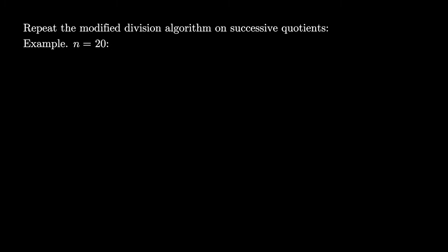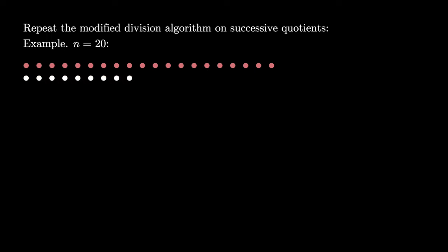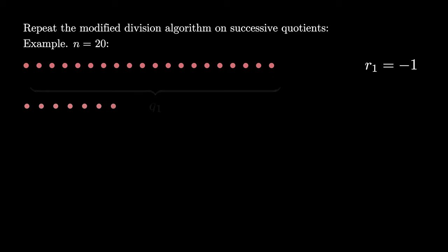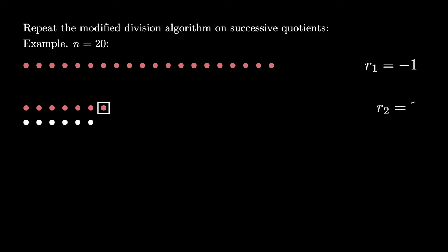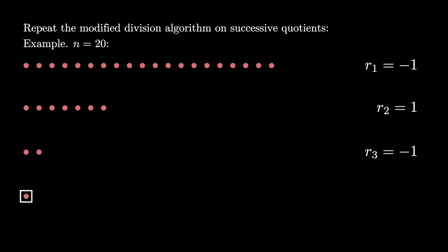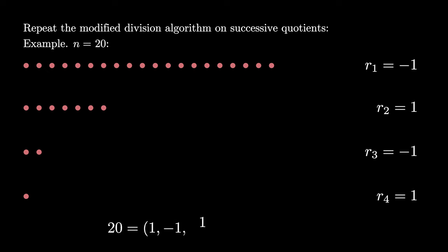Let's see a visual representation of this repeated process using n equals 20. We can group together 7 copies of 3 to overshoot by 1, leaving a remainder of negative 1, so our first quotient is 7. We use 2 copies of 3, leaving a remainder of 1. Group those 2 copies together for our next quotient, overshoot with one 3 to give a remainder of negative 1, leaving a quotient of 1, which gives a remainder of 1 and a final quotient of 0. So the balanced ternary representation for 20 is 1, negative 1, 1, negative 1, which we can verify as 27 minus 9 plus 3 minus 1.